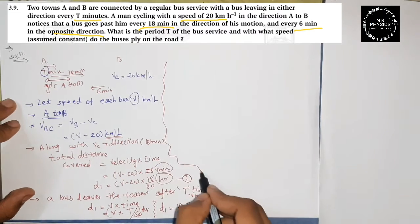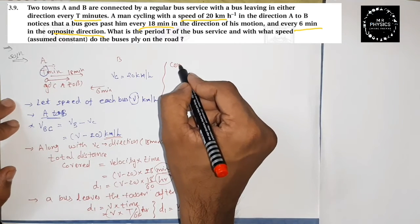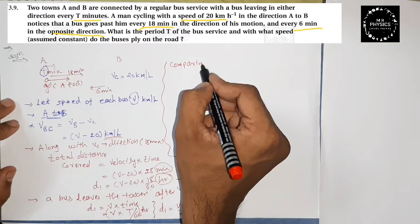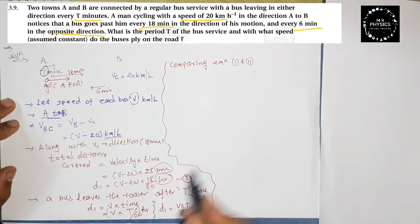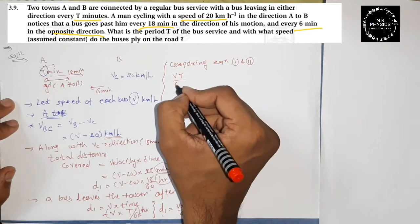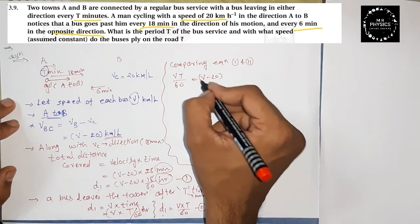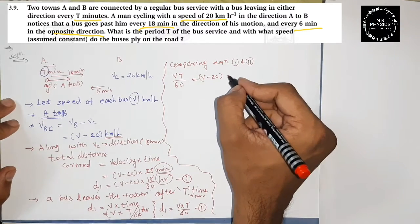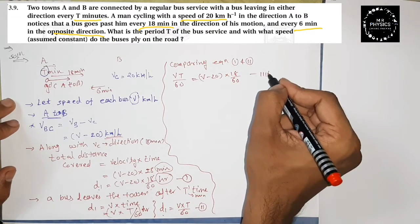Now we compare equation 1 and equation 2. Both have D1 on the left side. So substituting the value of D1, we get: V into T divided by 60 equals (V minus 20) into 18 by 60. This is equation number 3, valid for the A to B direction.